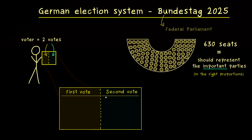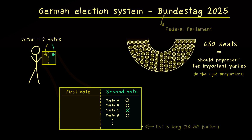Despite the naming, the second vote is the more important one because it goes directly to a party. As a voter you find a whole list of parties on the right-hand side and you are allowed to set exactly one cross — for example, you vote for party C. This ballot paper is really long because the list goes on for 20 to 50 parties. Since there are so many parties, only the important parties get seats in the parliament. The total number of second votes gives us the proportional representation of the parties in the Bundestag.